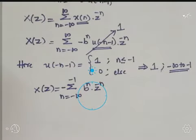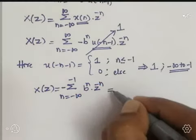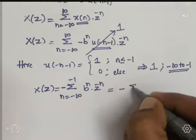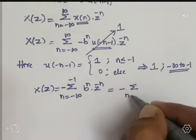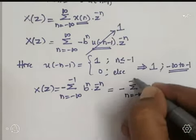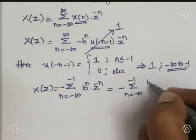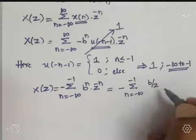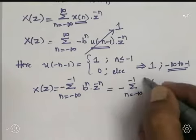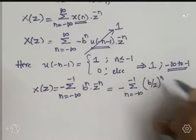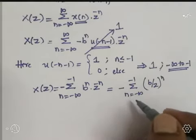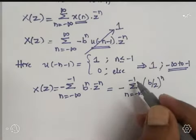We can simplify this as: minus × summation from n = -∞ to -1 of (B/Z)^n. However, since the limits run from -∞ to -1, there is no standard summation formula for this form.